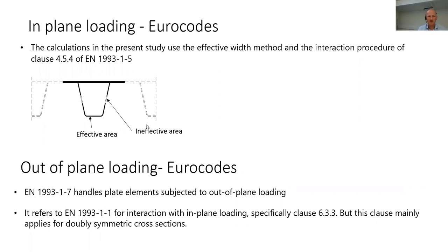The resistance for in-plane loading from Eurocode is predicted with the standard EN 1993-1-5. Here we use the effective width method and the interaction procedure of clause 4.5.4. As we can see here, the web of the stiffener is in class 4 and we have got the ineffective area here from local buckling, but the rest of the cross-section is effective.